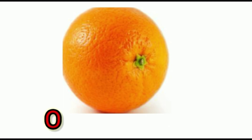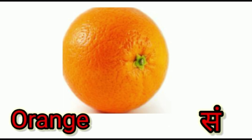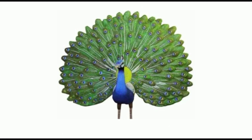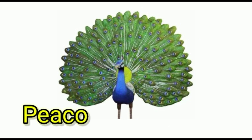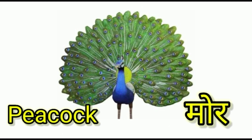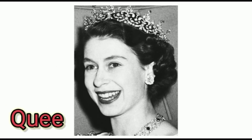O for orange. Orange means santra. P for peacock. Peacock means moor.